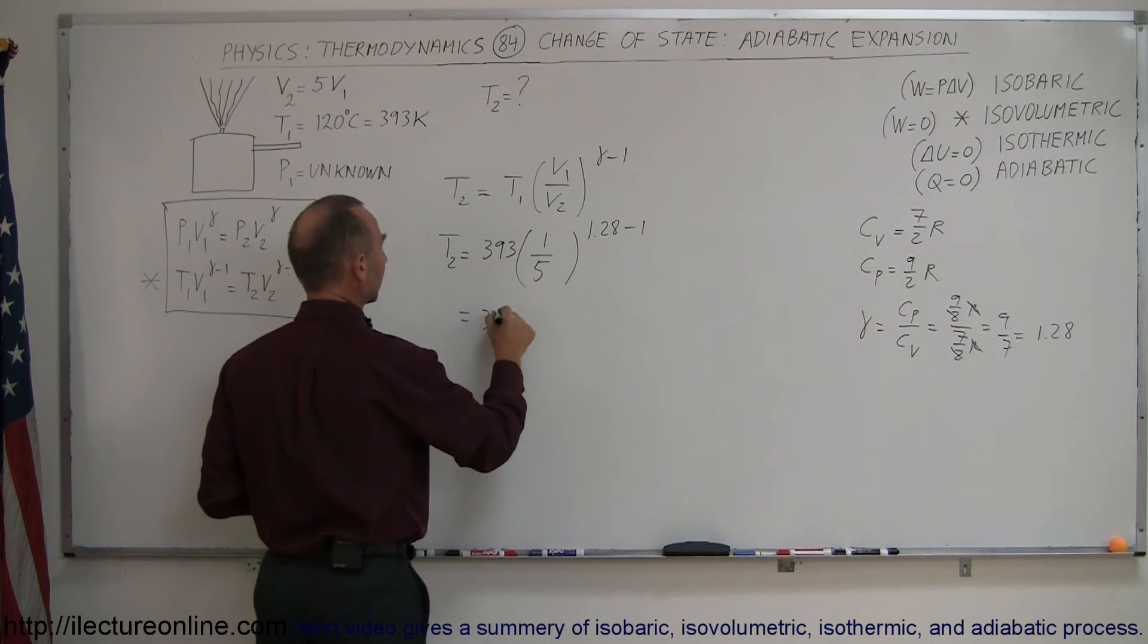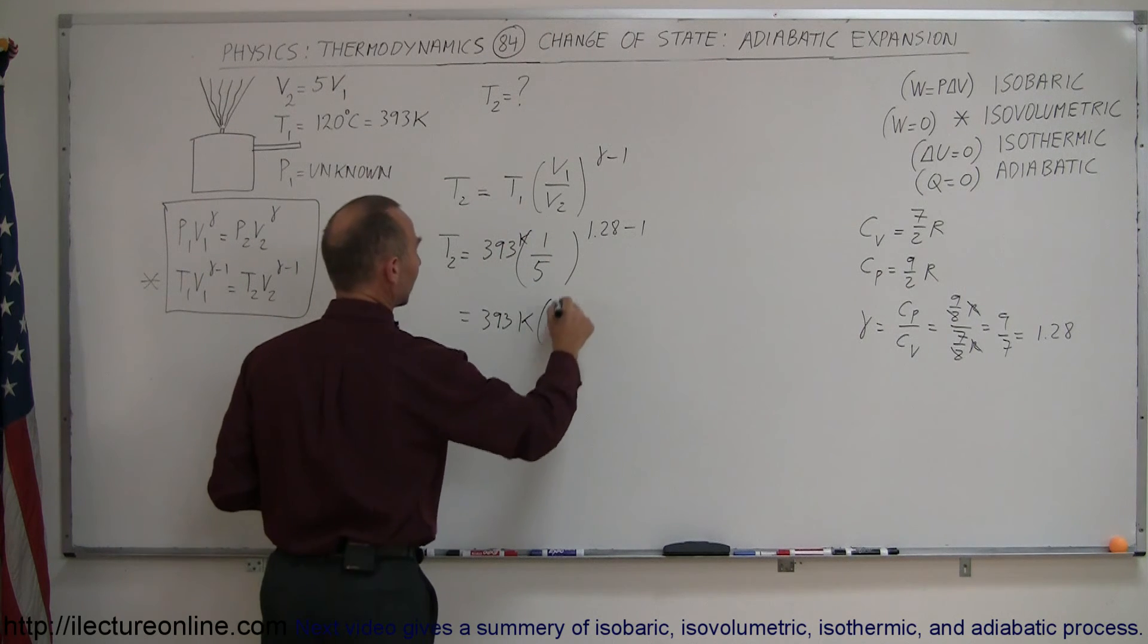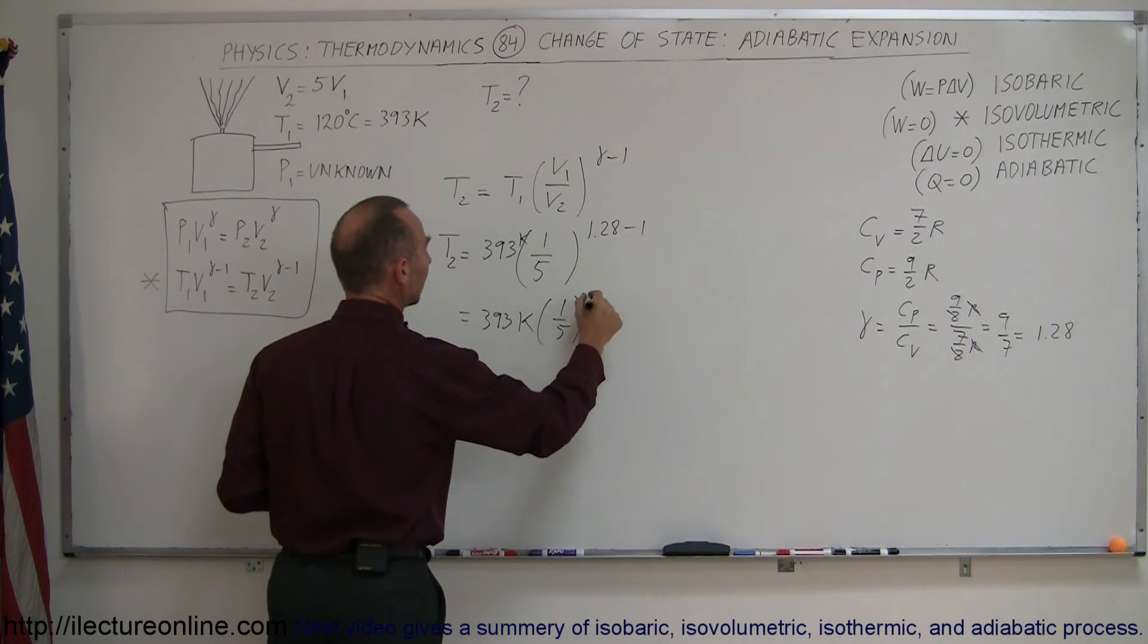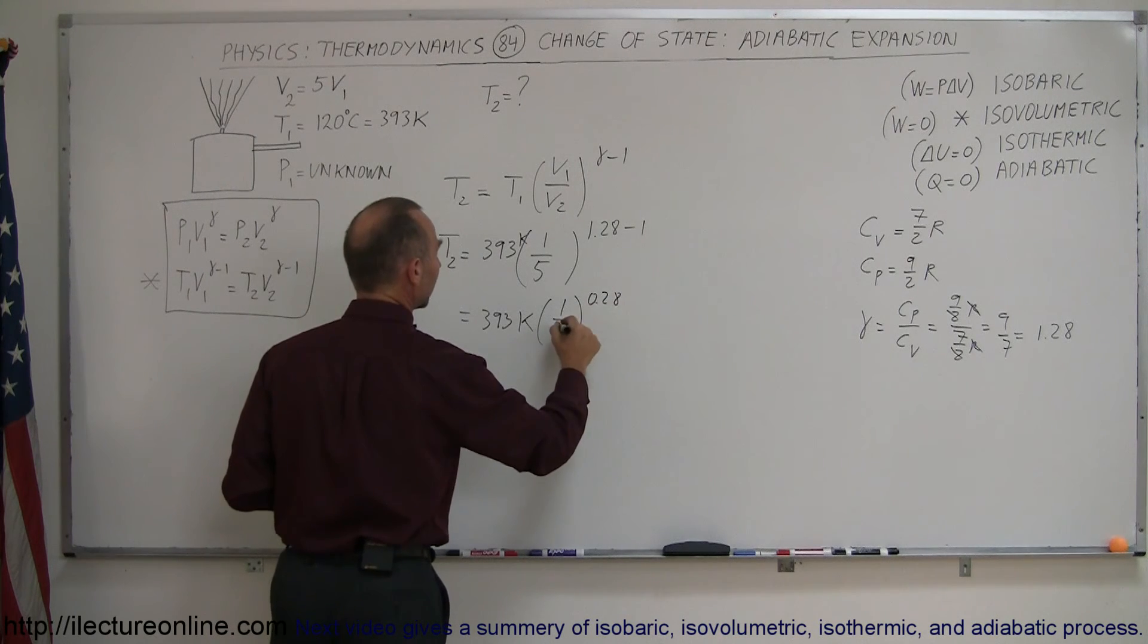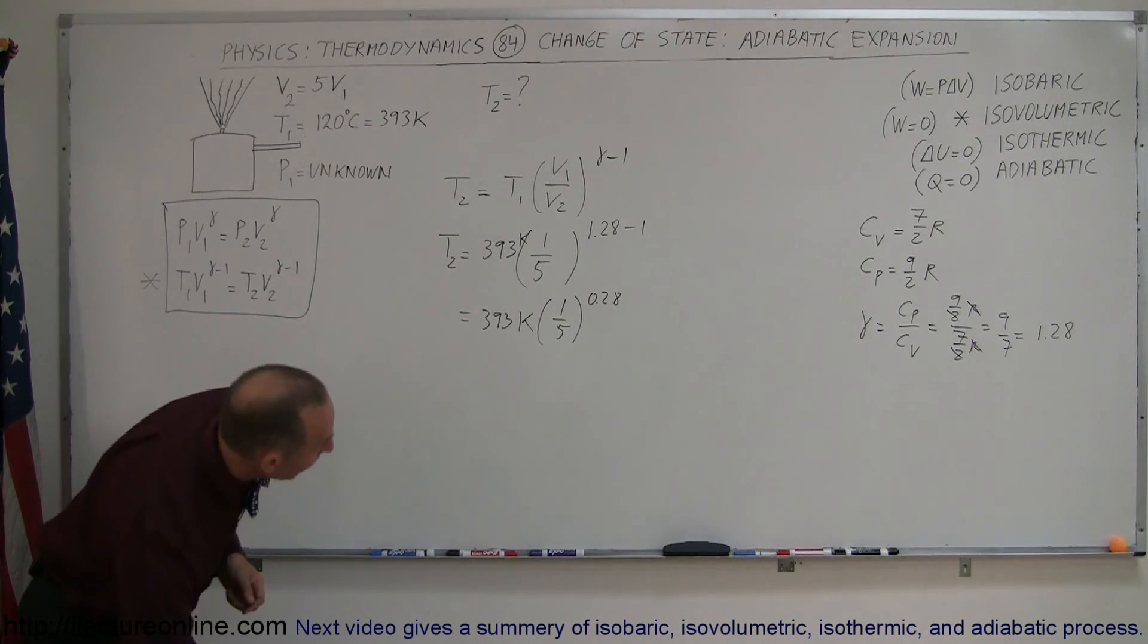and then the gamma would be 1.28 minus 1, so that would be equal to 393, and I should of course put the Kelvin down, times 1 over 5 raised to the 0.28 power, and with a calculator we should be able to figure that out,